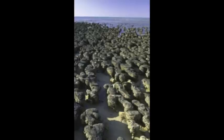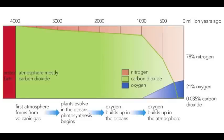Scientists believe that life started on earth about 4 billion years ago. About 1 billion years ago some organisms developed the ability to photosynthesise, taking in carbon dioxide and releasing oxygen. Over time more photosynthesising organisms evolved, including plants.